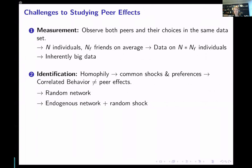There are generally two ways to solve the identification problem — we need some random variation. The first option is looking into random networks: where can I find peers that were randomly assigned to that person? Of course, that's not the case for most peers — most of the time we choose our friends. But there are certain aspects where there is a randomization element, for instance when you go to university and take classes. There often are multiple sections and it's to some extent random which section you end up in.